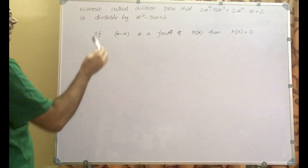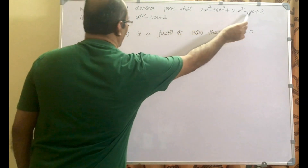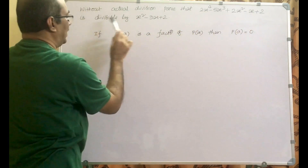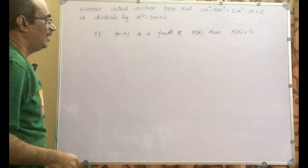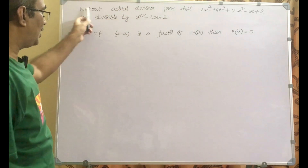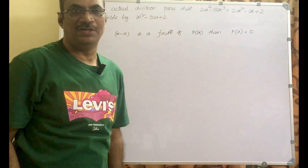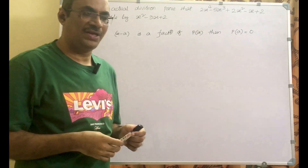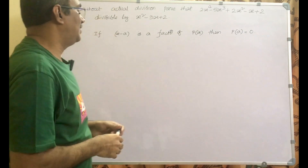We have to prove that this biquadratic polynomial is divisible by this quadratic polynomial, and we should not use actual division. That means we cannot use long division or synthetic division.